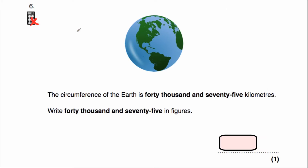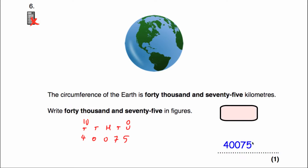In question 6 we've been told the circumference of the Earth is 40,075 kilometres — write 40,075 in figures. Considering our place value columns: tens of thousands, thousands, hundreds, tens and units. We've got 40,000, so 4 in the tens of thousands column. There are no hundreds, then seven tens and five units. So our answer would be 40,075.